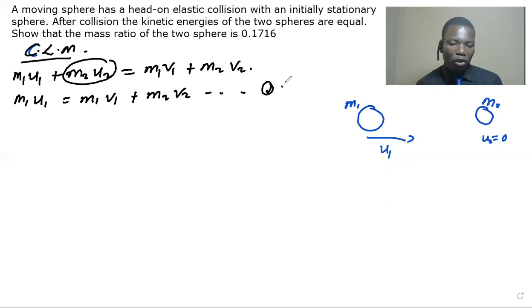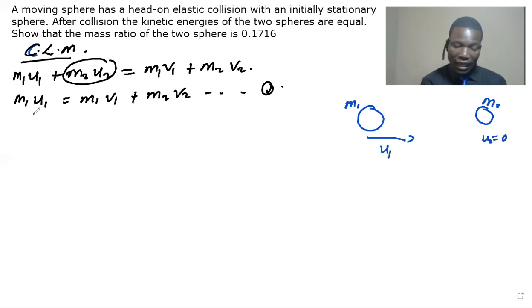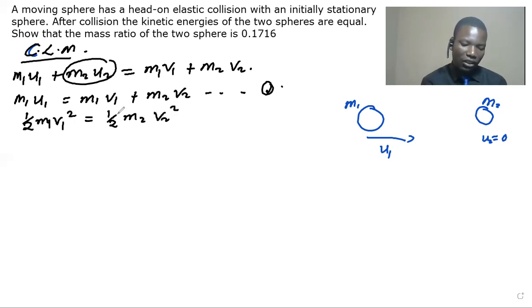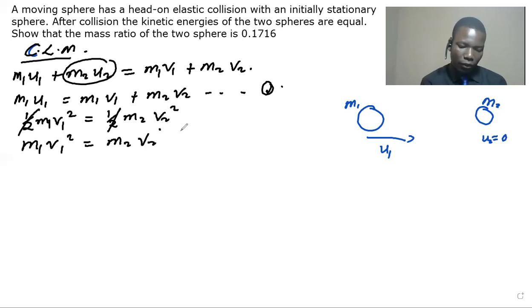After collision the kinetic energies of the two spheres are the same. So the kinetic energy of the first sphere equals the kinetic energy of the second sphere. This gives us m1*v1² = m2*v2². Let this be equation 2.